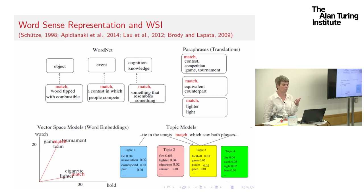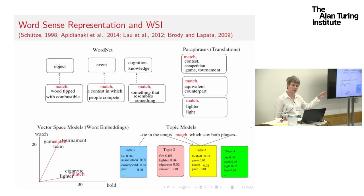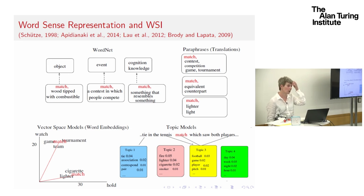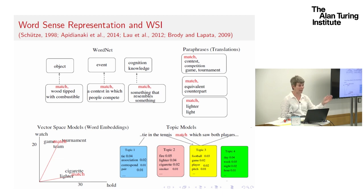Following on from word sense disambiguation, there are lots of different ways of representing sense. The traditional way was to get an inventory like WordNet and say which senses are there and use those definitions. Another way is to get parallel data, look at a word and how it's translated in different languages — you can also use machine translation to mirror back to the original language and come up with groupings of paraphrases as your sense definitions.